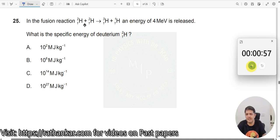Question number 25. In the fusion reaction, 1H2, 1H2 gives us 1H3, 1H3. Deuterium, 2 deuterium gives us a tritium plus a hydrogen. Energy of 4 MeV is realized. What is the specific energy of deuterium?